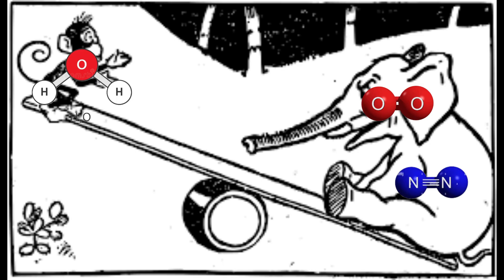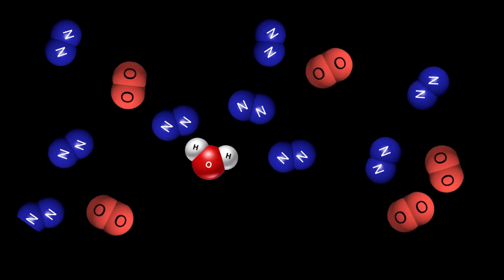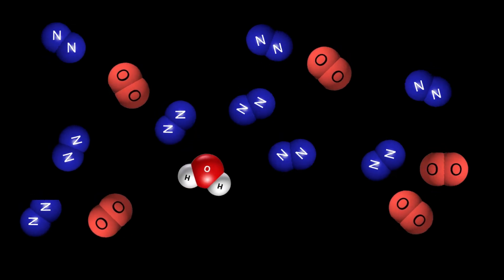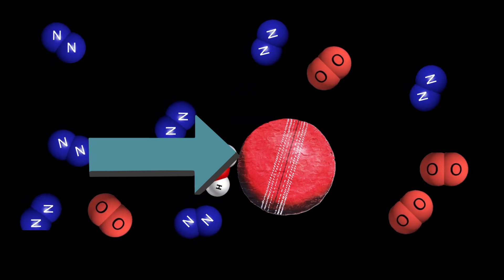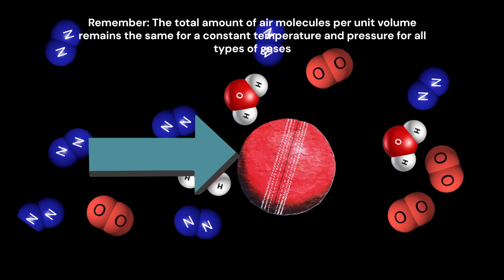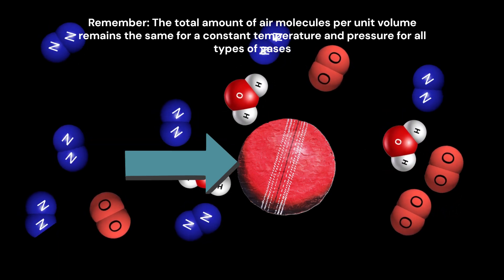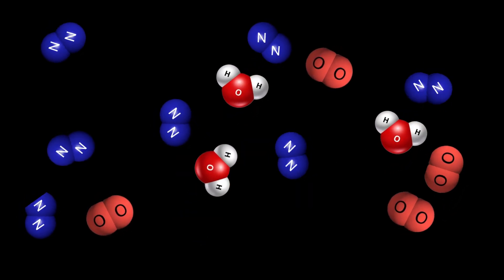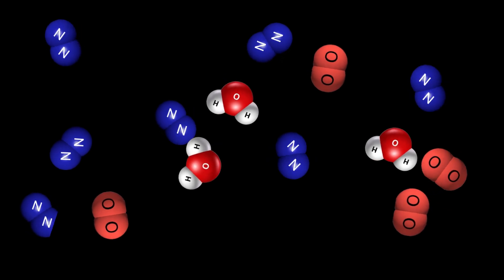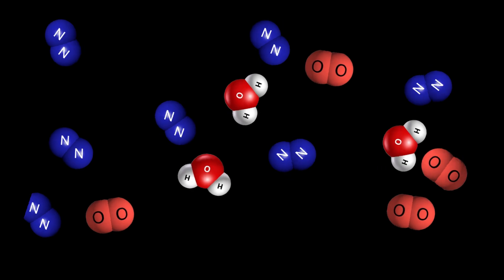Water molecules are in fact lighter than the air molecules of nitrogen or oxygen. So a higher humidity means that a larger proportion of the air is comprised of water molecules, and that only makes the air lighter. A lighter air means that the force with which the air pushes the ball during its movement is lesser, hence lowering the actual swing. But these effects are usually quite negligible because even during high humidity, the amount of water molecules in the atmosphere is quite low and not enough to have a significant impact.